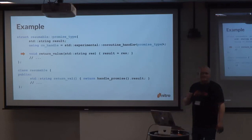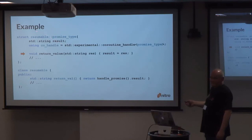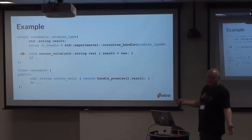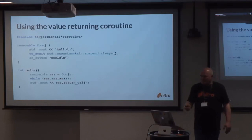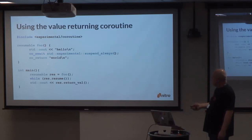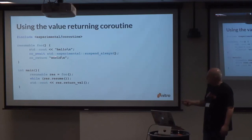Here is a resumable that returns a value. It's the same structure as before, but this time we keep a result in our promise. When we do return_value we just store it. In our resumable we have a return_value call that gets it — we get the promise and get the result field from the promise. Very straightforward. To use it: we create the resumable and resume it through its steps, and then get the return value. 'Hello' will appear, then the return value 'world', and then we print that out.